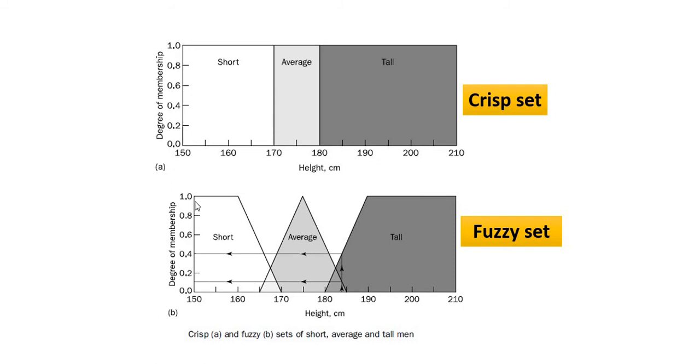In fuzzy set, we have a degree of membership for short, average, and tall. This shape is selected based on the characteristic of our input. If Ali is 150, Ali is considered short. If Abu is at 160, Abu is still short.